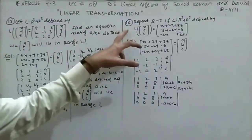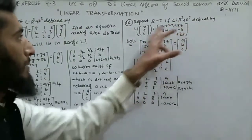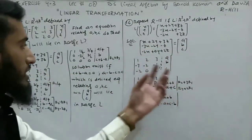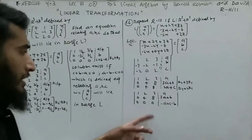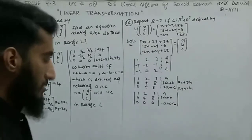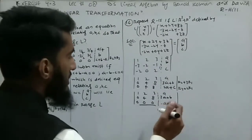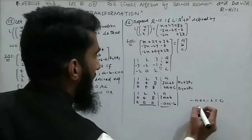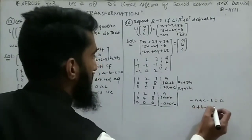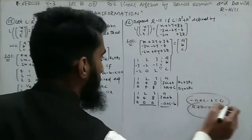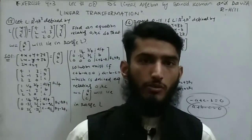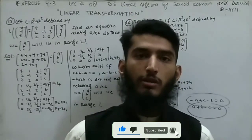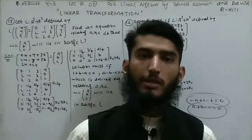Question 16 repeats question 15 for a different transformation L from R³ to R³. After row reduction, the third row is entirely zero, giving the condition -A + C - B = 0, or equivalently A + B - C = 0. With this, I finish my lecture. In the next video, I will solve the remaining questions of exercise 4.3. Thank you for watching, please subscribe and hit the bell icon for upcoming notifications on FSC or BSC mathematics.